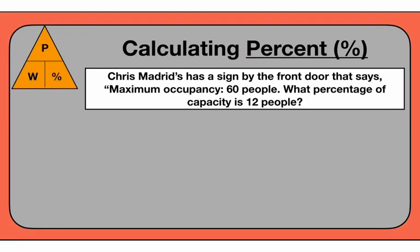Let's try for the percent. Now what if we need to find the percent value? I've got my triangle up here — if you don't have it, you can always just draw it quickly. It really helps with accuracy. Chris Madrid's — that's a restaurant, a hamburger place — has a sign by the front door that says maximum occupancy 60 people. What percentage of the capacity is 12 people? Maximum occupancy, the whole value, the total number of people allowed in there is 60. What percentage would 12 people be? We're solving for the percentage.